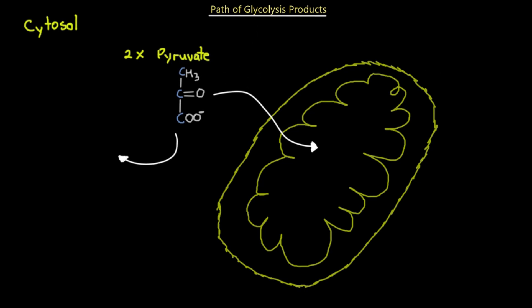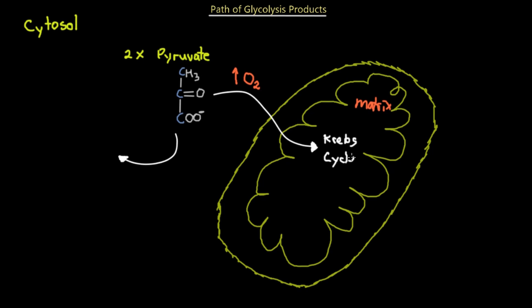If there is high oxygen available for the cell — so the cell is able to consume oxygen diffusing inside its cellular membrane — that gives pyruvate the ability to penetrate the outer and inner membranes of the mitochondria and go into the mitochondrial matrix. This is where cellular respiration happens with the Krebs cycle, which we will go over in this lecture.